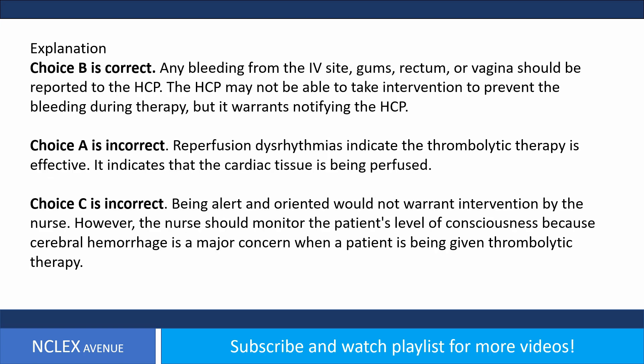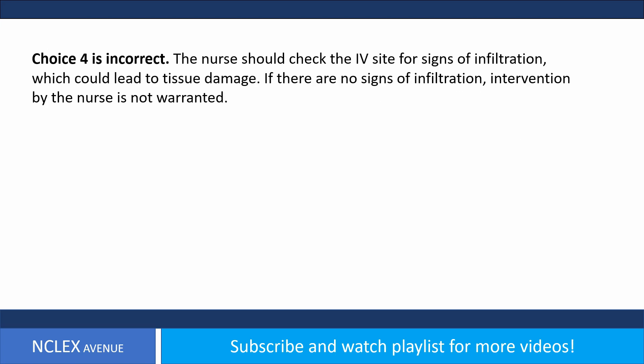Answer. Choice B is correct. Any bleeding from the IV site, gums, rectum, or vagina should be reported to the HCP. The HCP may not be able to take intervention to prevent the bleeding during therapy, but it warrants notifying the HCP. Choice A is incorrect. Reperfusion dysrhythmias indicate the thrombolytic therapy is effective; it indicates that the cardiac tissue is being perfused. Choice C is incorrect. Being alert and oriented would not warrant intervention by the nurse. However, the nurse should monitor the patient's level of consciousness because cerebral hemorrhage is a major concern when a patient is receiving thrombolytic therapy. Choice D is incorrect. The nurse should check the IV site for signs of infiltration, which could lead to tissue damage. If there are no signs of infiltration, intervention by the nurse is not warranted.